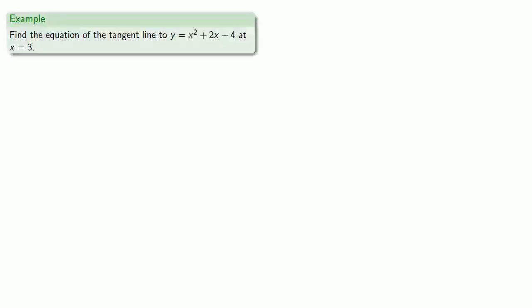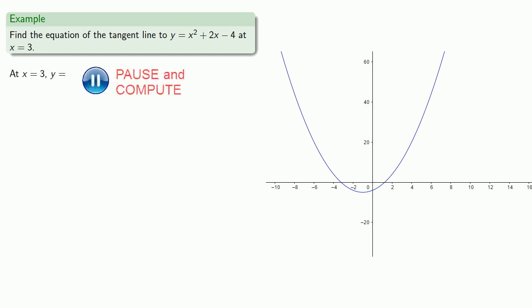Let's find the equation of the tangent line to y = x² + 2x - 4 at x = 3. It's extremely helpful to graph the equation, so let's graph it. We do need that point of tangency, and so at x = 3, y equals... And so the point of tangency is (3, 11).